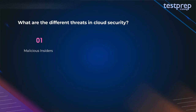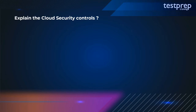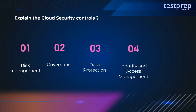Question 3: What are the different threats in cloud security? The threats include: first, malicious insiders; second, data breaches; third, advanced persistent threats; fourth, insecure application programming interface; fifth, shared technology issues. Question 4: Explain the cloud security controls. First, risk management; second, governance; third, data protection; fourth, identity and access management; fifth, compliance.